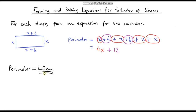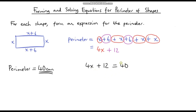Before I go through this, if you're a bit unsure of solving equations, I do have some videos on that, so I would definitely recommend you watch those. We know that an expression for the perimeter is 4x plus 12. But we know the perimeter is 40 centimetres, so we can just set that equal to 40. This is the expression for the perimeter, and this is what the perimeter is — they are the same. To solve this equation, I'm going to use the balancing method.